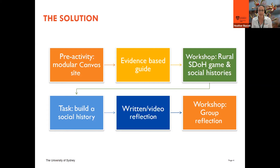We have a modular Canvas site which students are able to access one to two weeks before they arrive in Orange. We do this activity with them in their orientation week. It's mostly content-based with a few interactive opportunities, and students have a short quiz at the end. There's also an evidence-based guide we've developed which looks at all the domains of a social history and talks about the specifics of a rural setting.